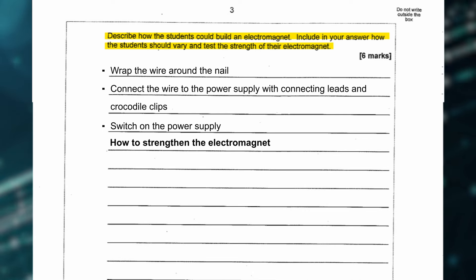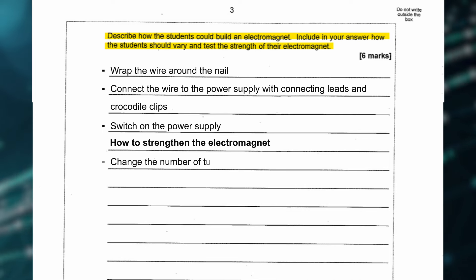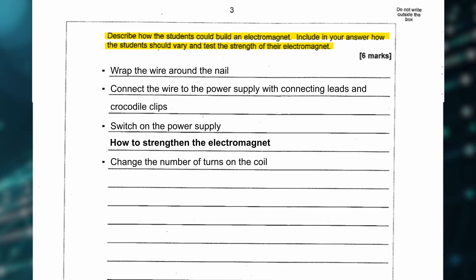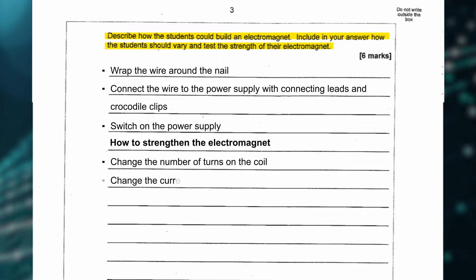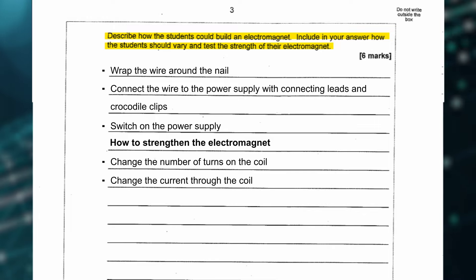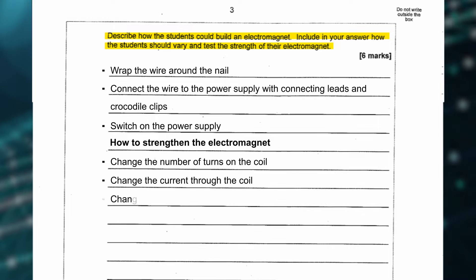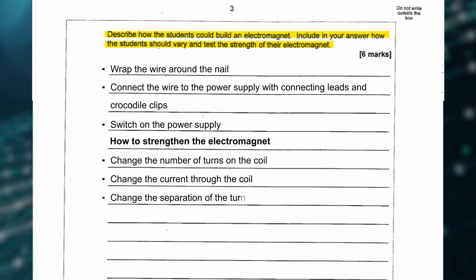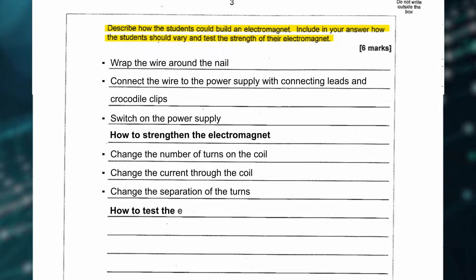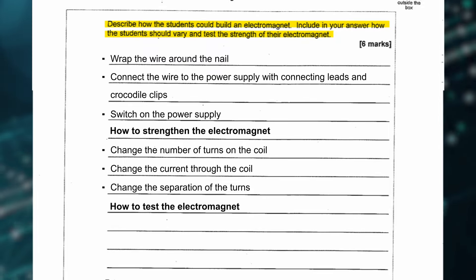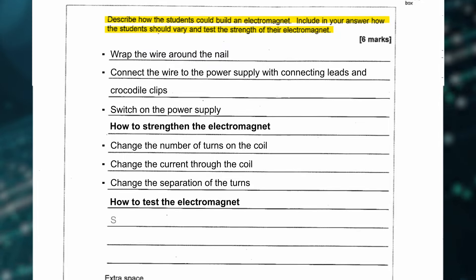For how to strengthen the electromagnet, you can change the number of turns on the coil, change the current through the coil, or change the separation of the turns.